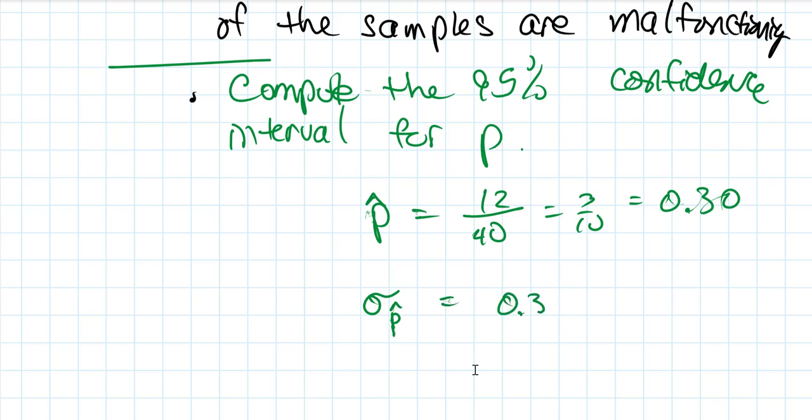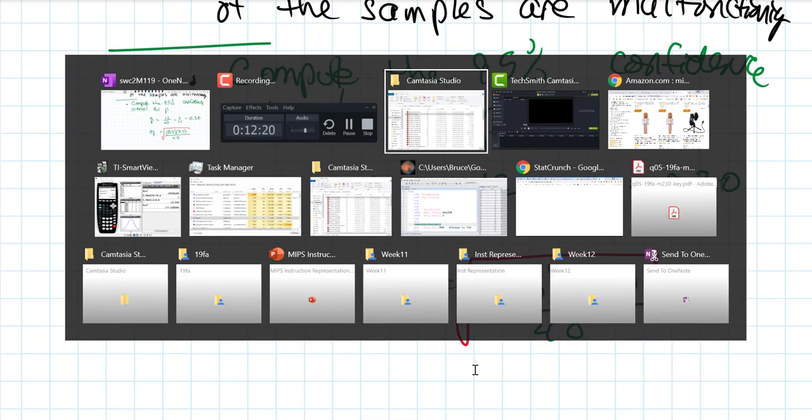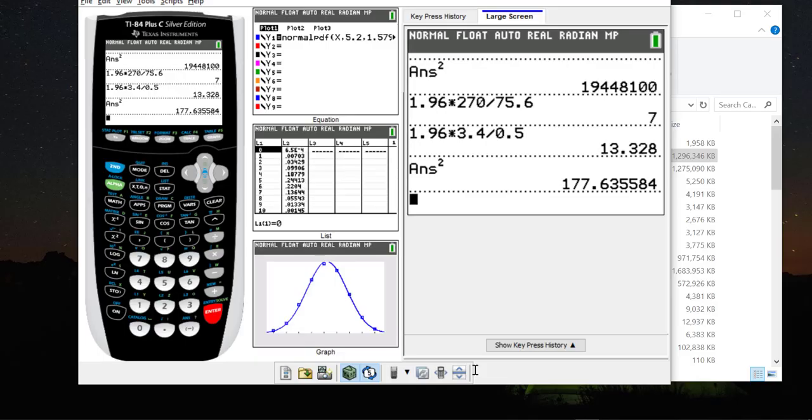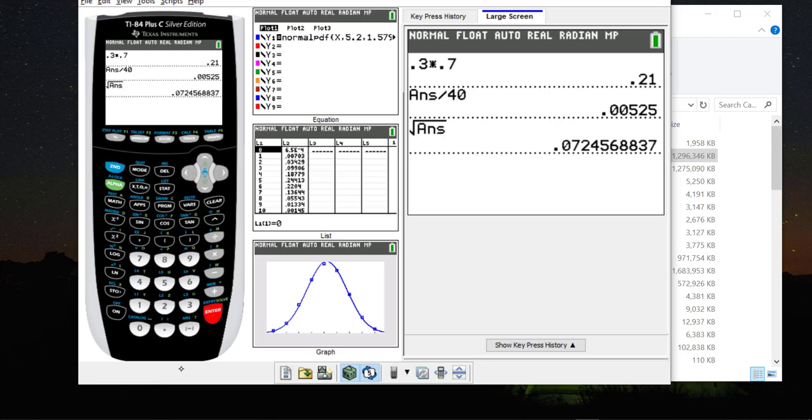Those two together add up to 1 of course since they're always complements, and then you want to take the square root of those two. So 0.3 times 0.7 divided by 40, and then take the square root of that. So 0.3 times 0.7 divided by 40, and let's take the square root of that answer that we just calculated.